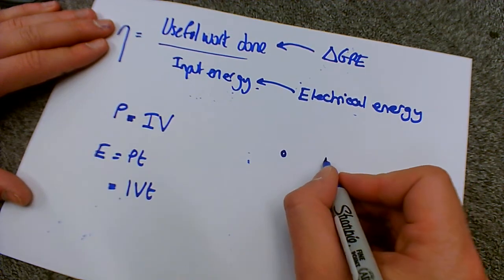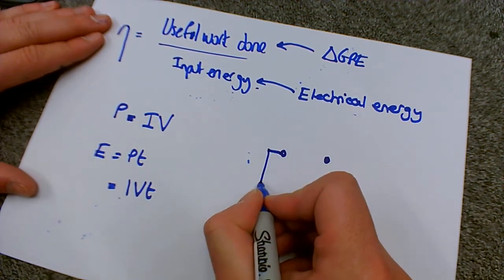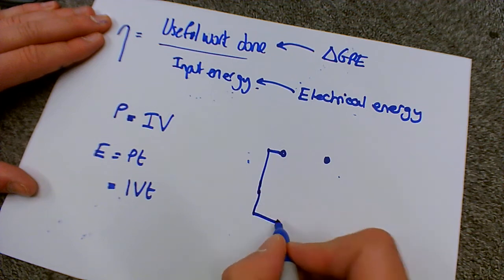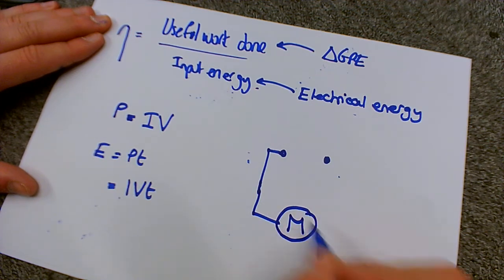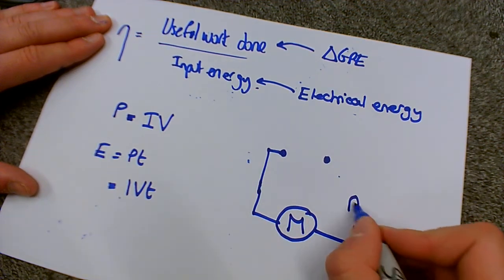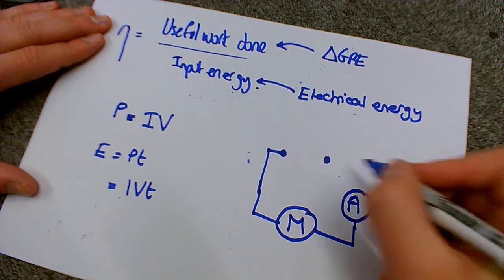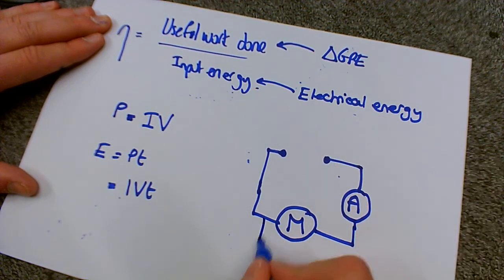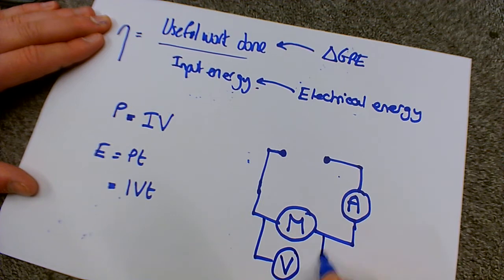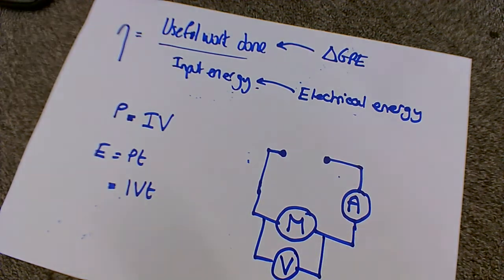So we've got a DC power supply. That then goes into the motor. So this is the circuit symbol for motor. That then goes to an ammeter so we can measure the current going through the motor. And we've got a voltmeter so we can measure the potential difference across the motor.